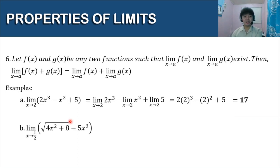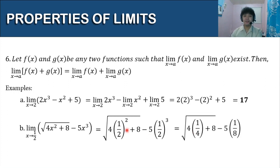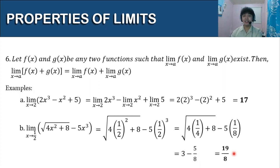For letter b, the limit of the square root of the quantity 4x squared plus 8, minus 5x cubed, as x approaches 1/2 — substitute to get the square root of 4 times (1/2) squared plus 8, minus 5 times (1/2) cubed. We have (1/2) squared equal to 1/4 and (1/2) cubed equal to 1/8. So 4 times 1/4 is 1, plus 8 is 9, and the square root of 9 is 3. Then 5 times 1/8 is 5/8. Simplifying, our final limit is 19/8.